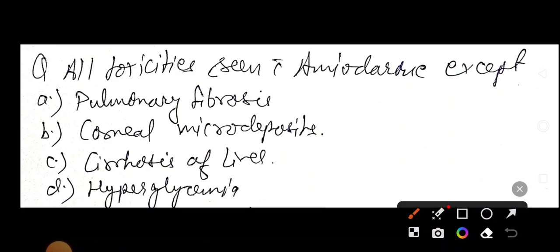All toxicities seen with amiodarone except, very important gold standard, lot of time they ask MCQ from amiodarone: pulmonary fibrosis, corneal micro-deposits, liver cirrhosis, hyperglycemia. More than one answer are correct here. No, they are asking except. So one answer is correct. So guys, what is your answer?